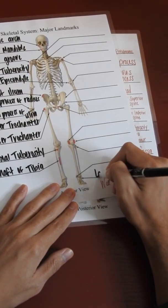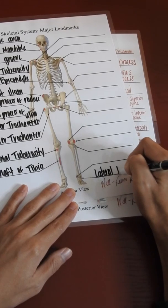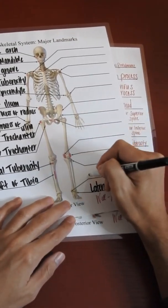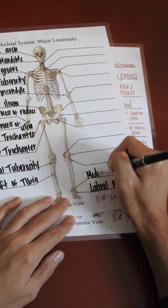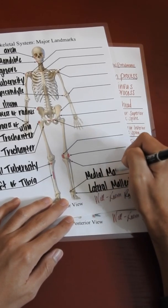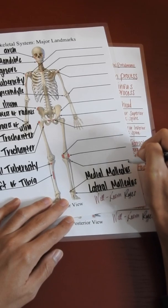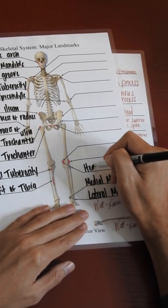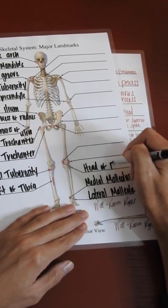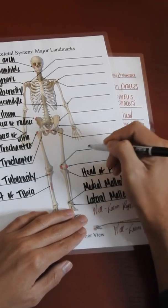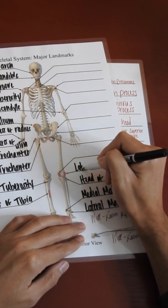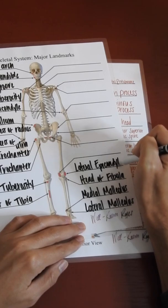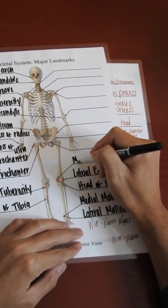The lateral malleolus, the medial malleolus, the head of the fibula, the lateral epicondyle of the femur, and the medial epicondyle of the femur.